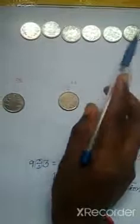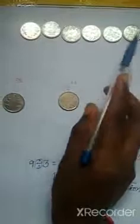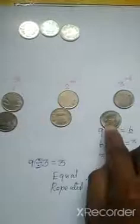Now we have 6 coins — 1, 2, 3, 4, 5, 6. Again we take out 3 coins and give to the 1st person, 2nd person, and 3rd person. So 6 minus 3 equals 3.